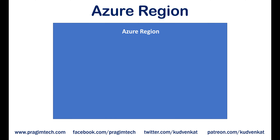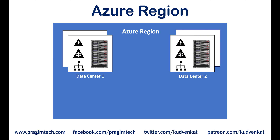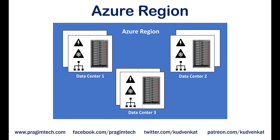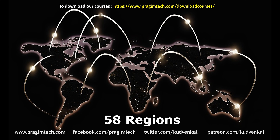Now, what is an Azure region? Simply put, an Azure region is a set of data centers connected through a dedicated low latency network. How many data centers does a region contain? We do not have a fixed number — it varies. There are regions of different sizes. A region could be made up of just one data center or multiple data centers. An Azure region is a group of one or more Azure data centers. As of this course recording, Azure has 58 regions worldwide.